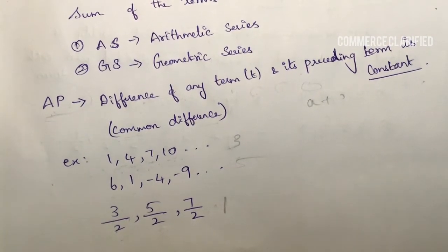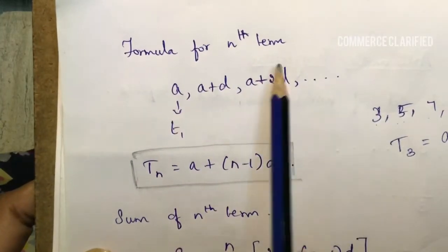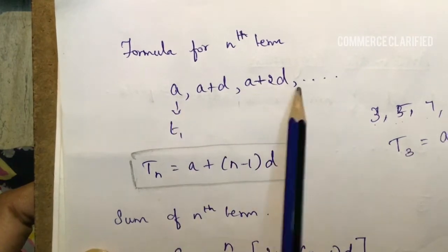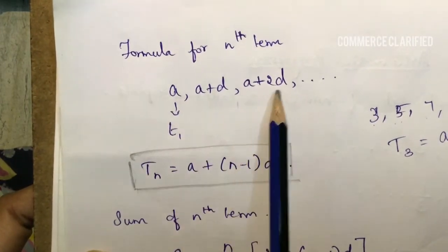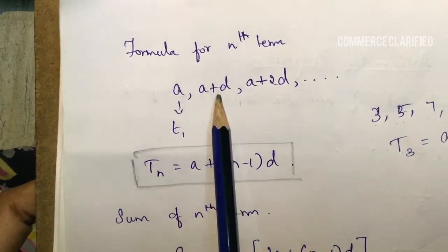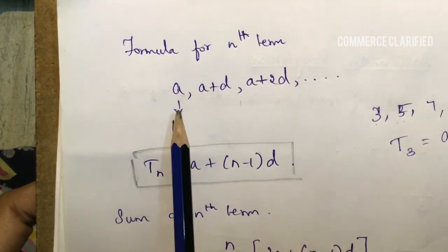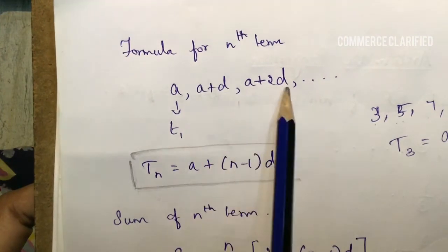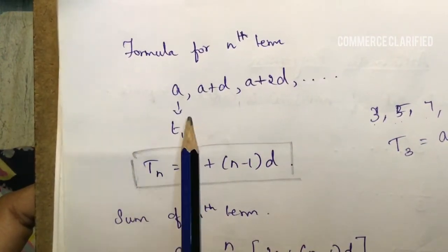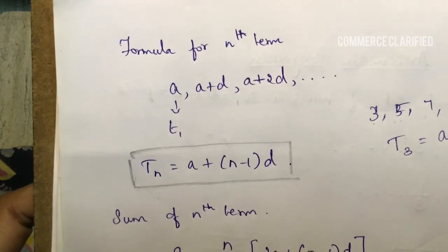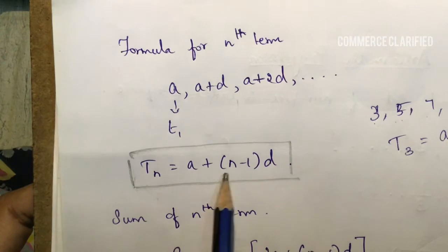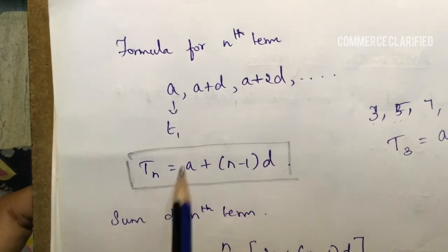Now the formula for the nth term. In an arithmetic progression we assume the terms as: a, a plus d, a plus 2d, where a is the first term and d is the common difference. The formula for the nth term is: T_n equals a plus (n minus 1) into d.